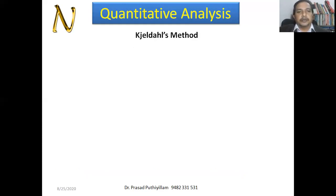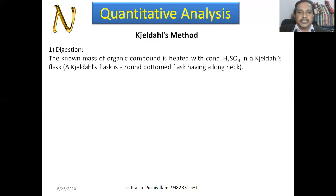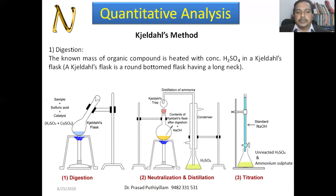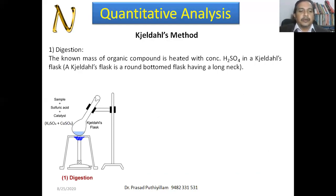Now we move on to the next method to estimate nitrogen — the Kjeldahl method (spelled K-J-E-L-D-A-H-L). It has three stages. Stage 1 is digestion, Stage 2 is neutralization and distillation, and Stage 3 is titration. In the digestion stage, a known mass of organic compound is heated with concentrated sulfuric acid and a catalyst — potassium sulfate and CuSO₄ — to speed up the reaction. Sulfuric acid acts as the oxidizing agent.